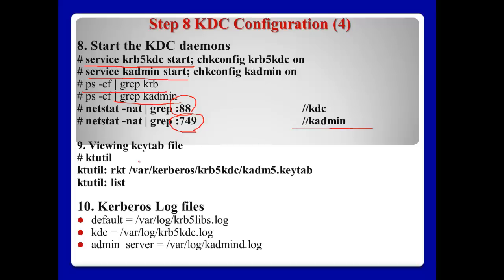Number 9: Viewing the keytab file. The keytab file is a database file, so we cannot see the internal contents directly. In this case, we can use ktutil — run 'rkt' to read the keytab file, then 'list' to show its contents. Number 10: Kerberos log files. Kerberos log files can be three kinds: first, default krb5library.log; second, KDC at /var/log/krb5/kdc; and third, administrator server at /var/log/kadmind.log.